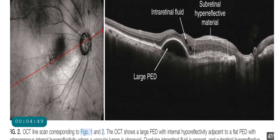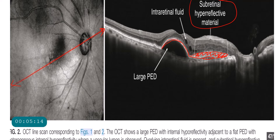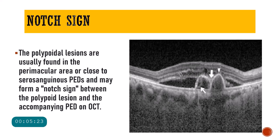In this line scan picture, you can see a large pigment epithelial detachment, and here you also have a small pigment epithelial detachment. You can see hyper-reflective subretinal material present here. This PED is also leaking and there is intraretinal fluid also located in this area.